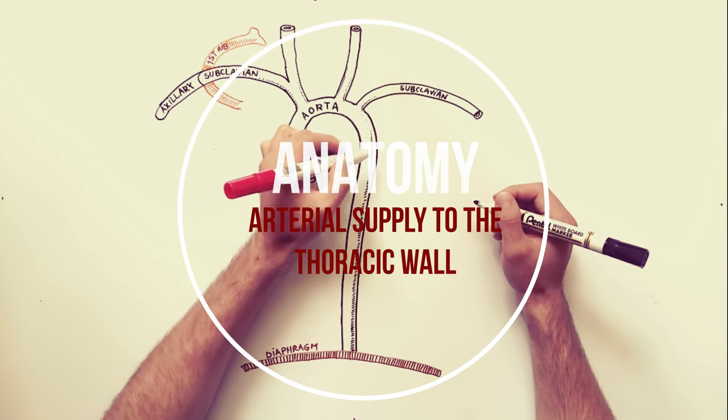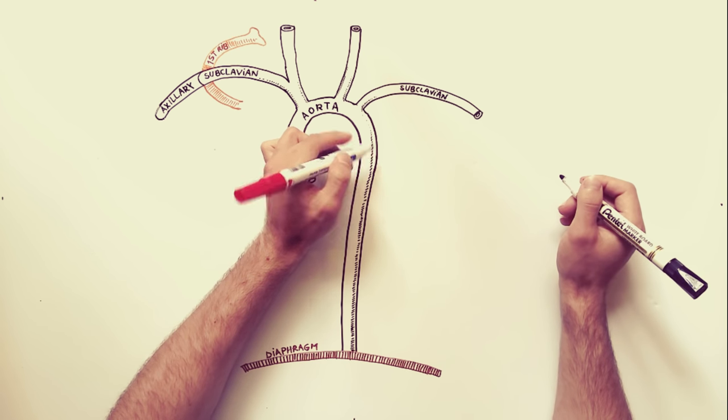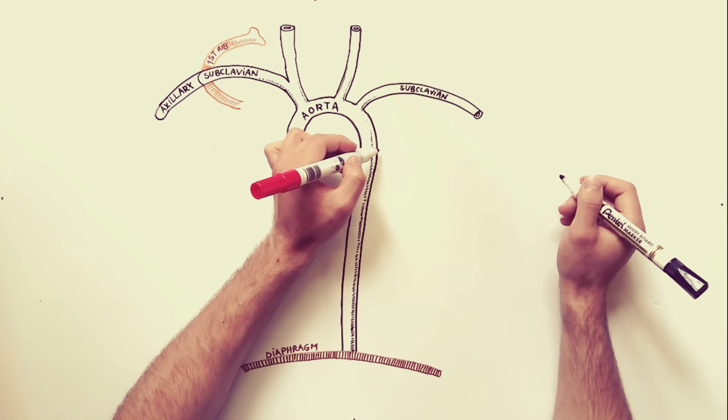We will discuss today about the arterial supply to the thorax. The thoracic wall is supplied by branches of the subclavian artery, the axillary artery, and the aorta.